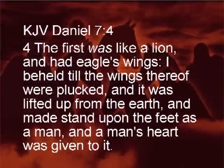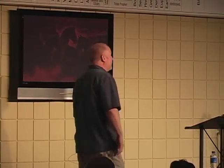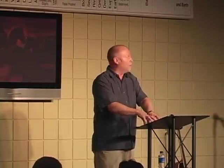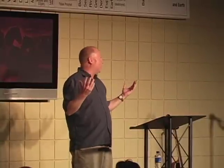Verse 4: 'The first was like a lion and it had eagle's wings. I beheld till the wings were plucked and it was lifted up from the earth and made to stand on its feet as a man, and a man's heart was given to it.' If you paid attention during Desert Storm, you probably noticed the symbol of Iraq — a lion with eagle's wings. That was and is the symbol of Iraq, but it's also the symbol of ancient Babylon. So here you have the Babylonian Empire rising up out of the Gentile nations. Daniel knew exactly who it was — that's where he was living right then.